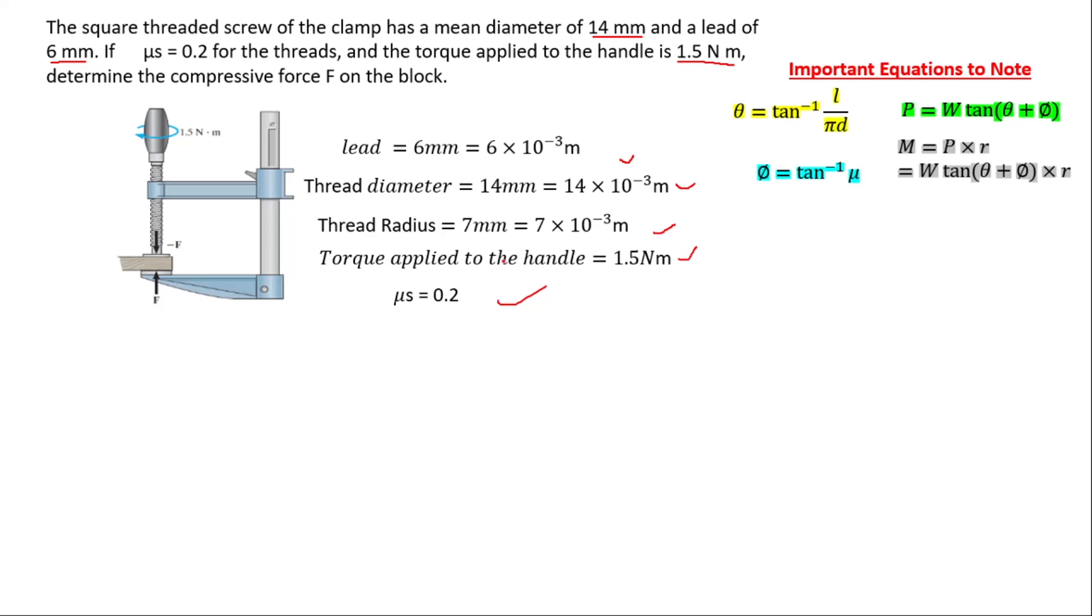Since we have our data, we can use it to find both the helix angle and the friction angle. With the helix angle or the lead angle, that's the tan inverse of the lead over pi times the diameter of the thread. And we have 7.768 degrees. That is the lead angle.